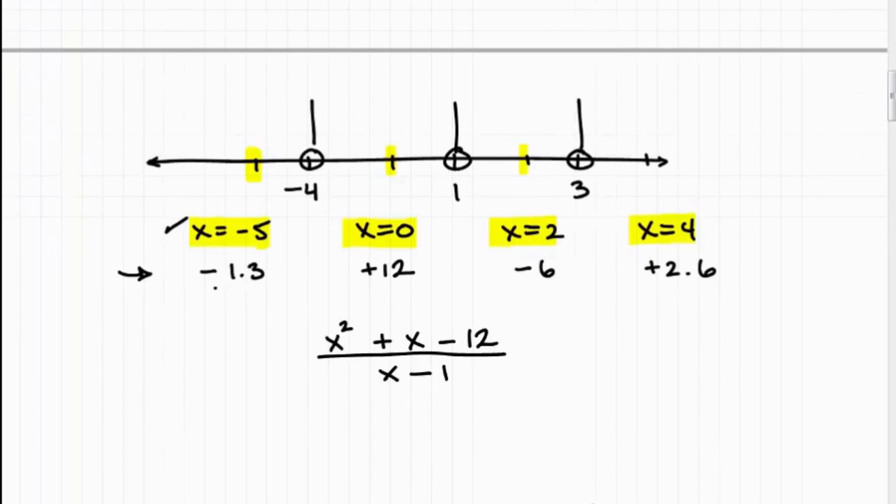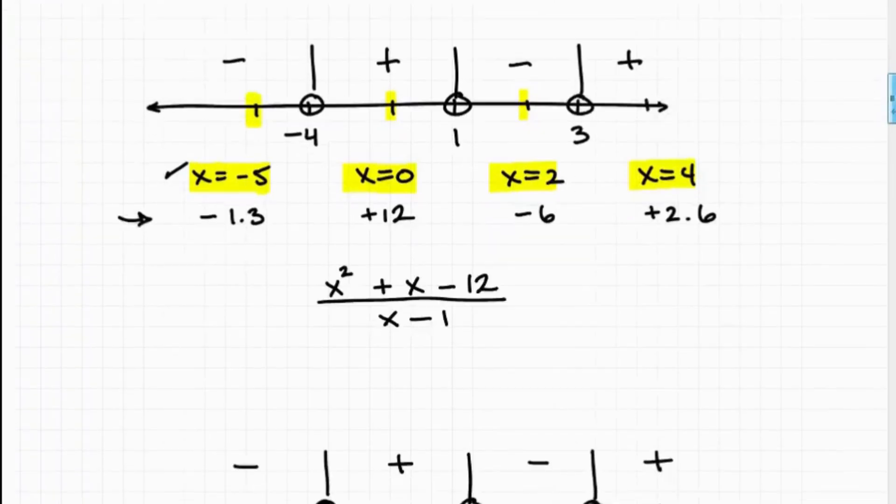So when you plug in each of these test values, here's the respective results, okay? And I don't really care about the actual numeric value. I care about the sign. So here, the first one with negative five, I got a negative in this region, okay, a negative number. In this, between this sector here, I got a positive 12, so this is positive in here. In between this sector, I got a negative number, so this is negative. And then over here, I ended up with a positive number. So this is my sign chart, okay?